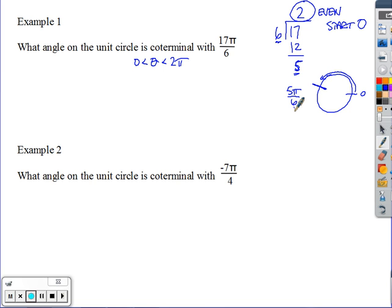The other option would be to take the 17π over 6 and subtract 2π from it. And when I do that, I end up with 5π over 6.